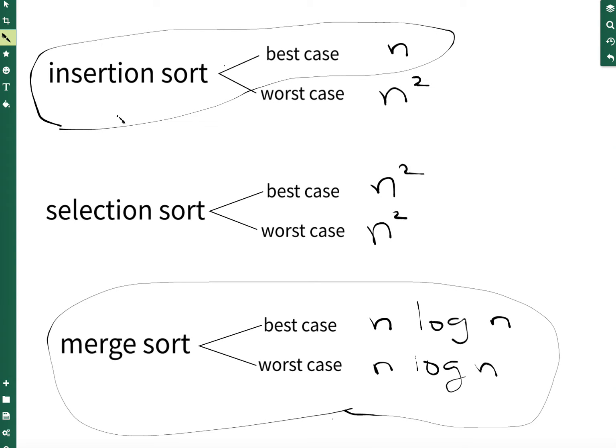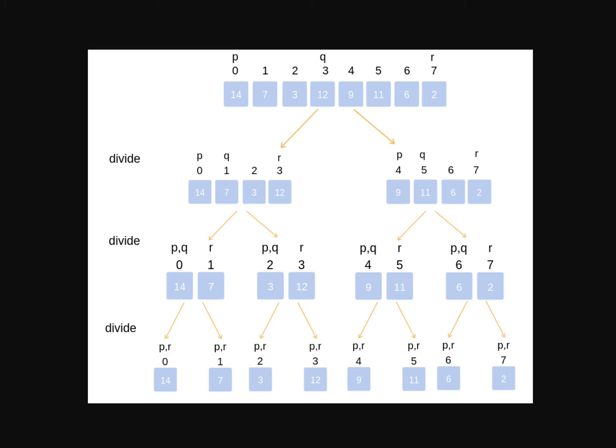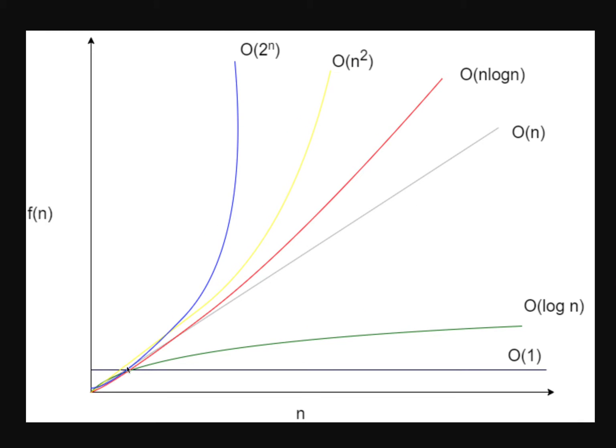Because insertion has a best case of n. And so if the list is sorted or mostly sorted, then insertion beats merge. If the list is sorted or mostly sorted, then we get a time complexity using insertion of n right here, which is better than n log n.